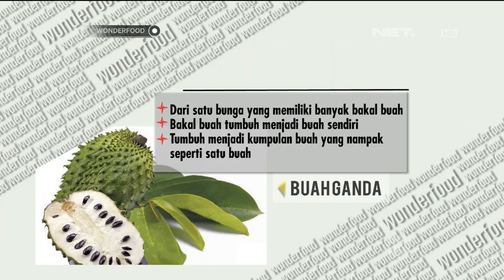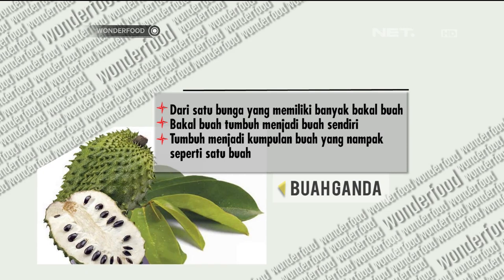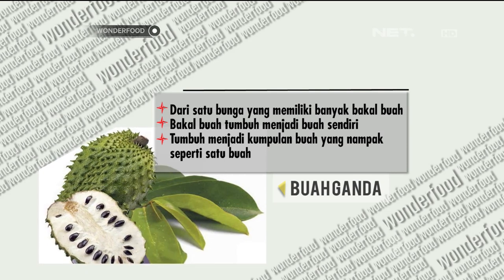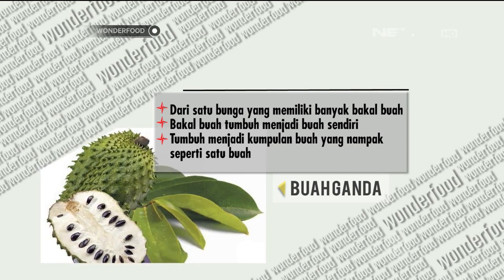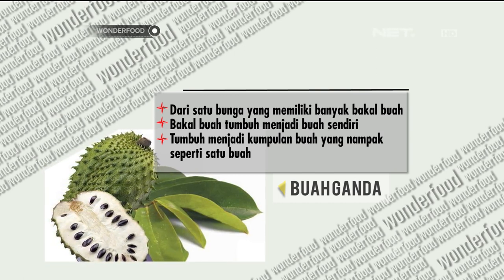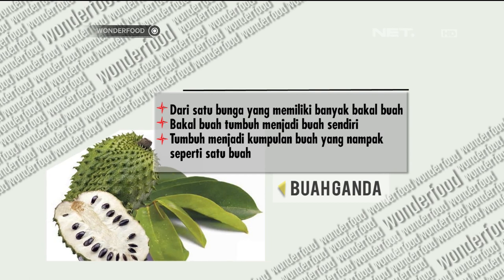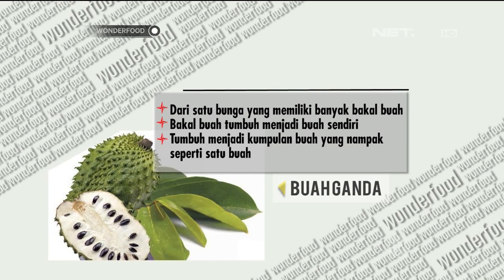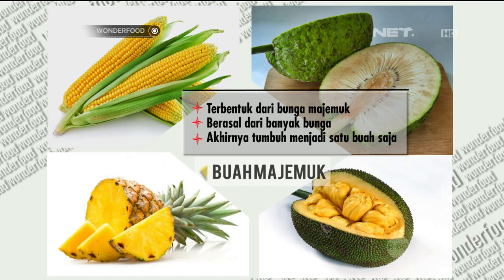Buah ganda adalah buah yang terbentuk dari satu bunga yang memiliki banyak bakal buah. Masing-masing bakal buah tumbuh menjadi buah tersendiri, lepas-lepas, tetapi akhirnya menjadi kumpulan buah yang nampak seperti satu buah. Contohnya buah sirsak. Buah majemuk adalah buah yang terbentuk dari bunga majemuk. Buah ini berasal dari banyak bunga yang pada akhirnya seakan-akan menjadi satu buah saja. Contohnya adalah jagung, nanas, nangka, dan kluwi.